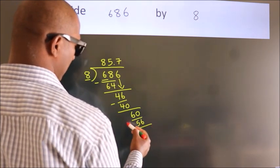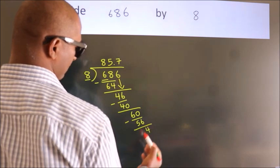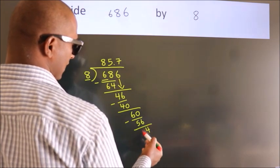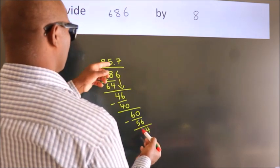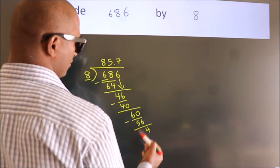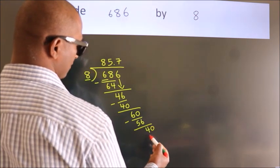Now we subtract. We get 4. After this, we already have the decimal, so directly take 0. So, 40.